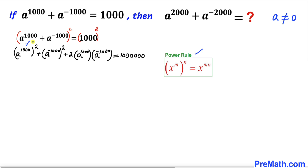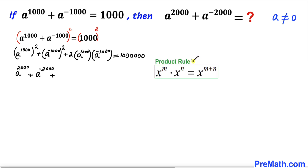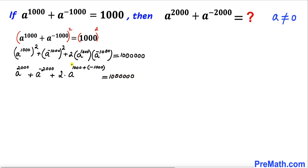The left hand side becomes: 1000 × 2 gives us a^2000, plus a^(-2000). Then let's apply the product rule: 2 times a^1000 · a^(-1000), which we can write as 2·a^(1000 + (-1000)), and the right hand side is 1,000,000.